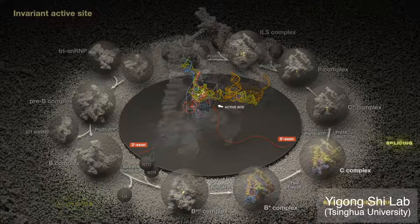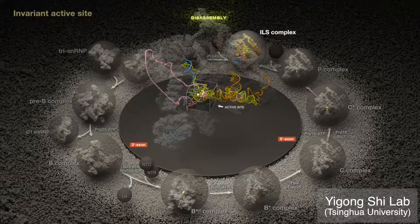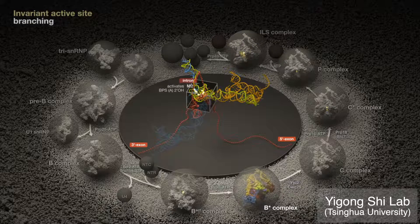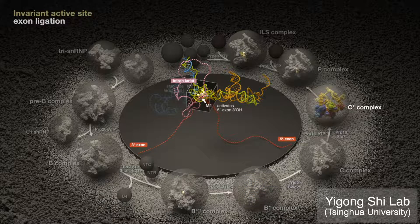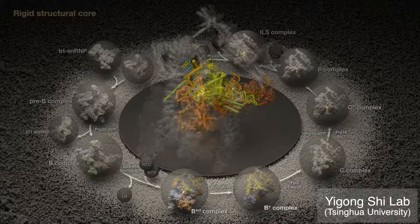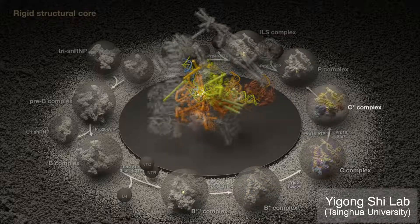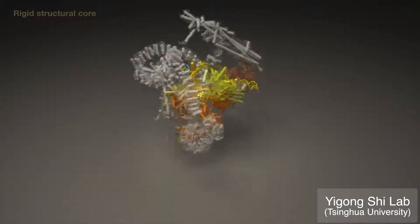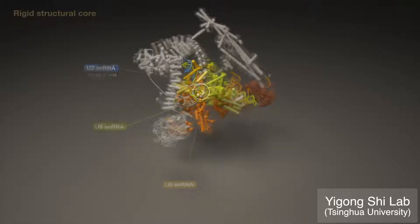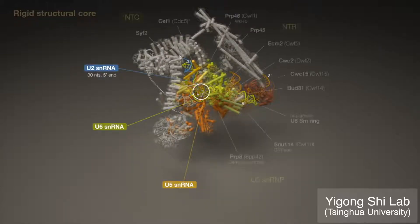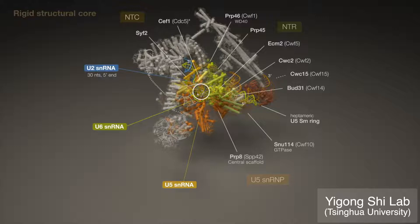Organization of the active site, after it is created, is mostly invariant. During branching, catalytic M2 ion activates the BPS nucleophile, as M1 stabilizes the 5' exon leaving group. Then at ligation, M1 activates this moiety while M2 stabilizes the leaving intron lariat. The structural core surrounding the active site is rigid, consisting of U5, U6, and a stretch of U2 RNA, as well as 17 associated proteins which stabilize these RNA elements and shape the active site.